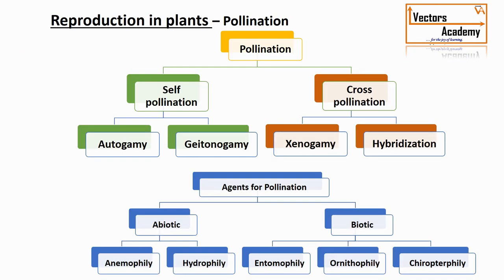To summarize the topic of pollination: self-pollination is of two types — autogamy and geitonogamy. Cross-pollination is of two types — xenogamy and hybridization. Agencies of pollination: abiotic includes anemophily (wind/air) and hydrophily (water), with hydrophily having two types — hypohydrophily and epihydrophily. Biotic factors include entomophily (insects), ornithophily (birds), chiropterophily (bats), and malacophily (snails). Thank you.